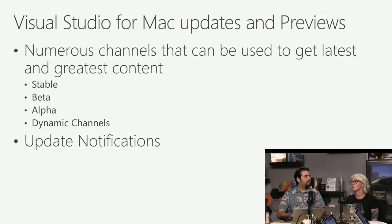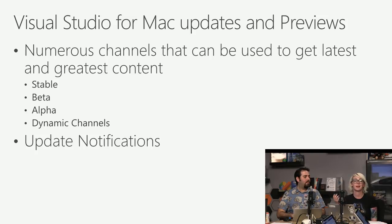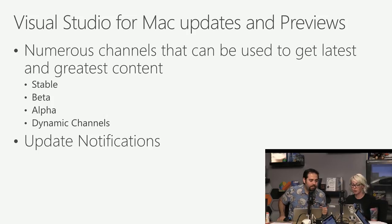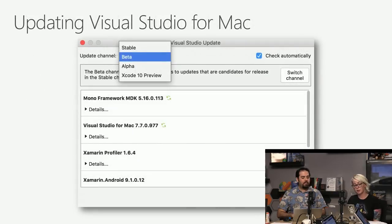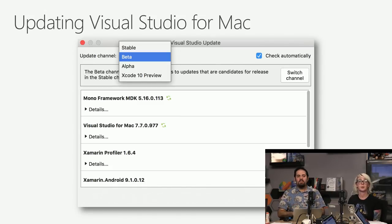We also have dynamic channels which we add for specific purposes, such as Xcode 10. For iOS developers trying to keep your Xamarin iOS app up to date for iOS 12, we were sending Xcode 10 updates through that dynamic channel — much easier than going to the web and downloading everything from there. You'll also get notified through the toolbar or a pop-up whenever there are updates. To update, just bring up the updater dialog, select the channel you want, switch to that channel, download, and install.